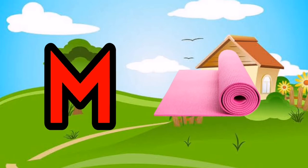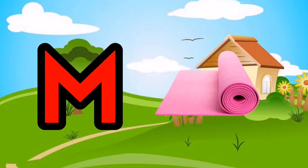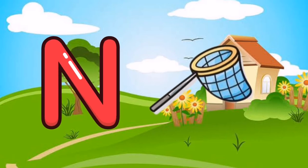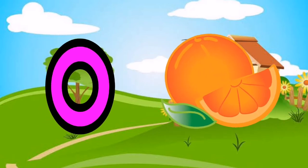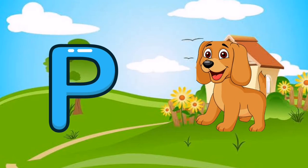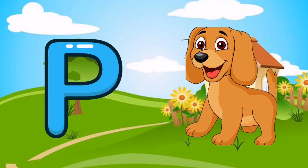M is for Mat, M-M-Mat. N is for Net, N-N-Net. O is for Orange, O-O-Orange. P is for Pet, P-P-Pet.